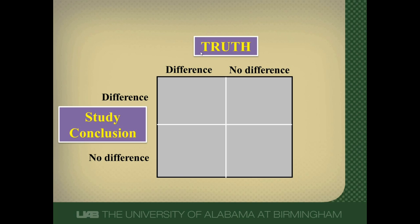There's some truth out there when you look at a study and the intervention arms — there's either a difference between the arms of a study or no difference. We do a study to estimate truth; we can never know the truth, we can only estimate it. Our study can say there's a difference between the two arms or no difference. We're in great shape when our study found a difference and one truly exists, or our study said there's no difference and one doesn't really exist.